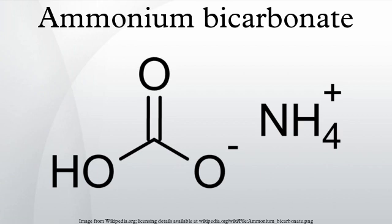Reaction with base produces ammonia. It reacts with sulfates of alkaline earth metals to precipitate their carbonates: CaSO4 + 2 NH4HCO3 → CaCO3 + (NH4)2SO4 + CO2 + H2O. It also reacts with alkali metal halides, giving alkali metal bicarbonate and ammonium halide: NH4HCO3 + NaCl → NH4Cl + NaHCO3; NH4HCO3 + KI → NH4I + KHCO3; NH4HCO3 + NaBr → NH4Br + NaHCO3.